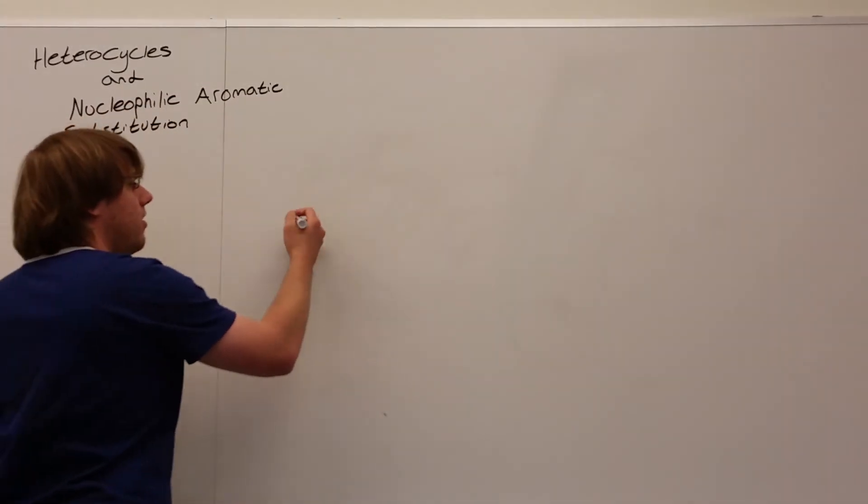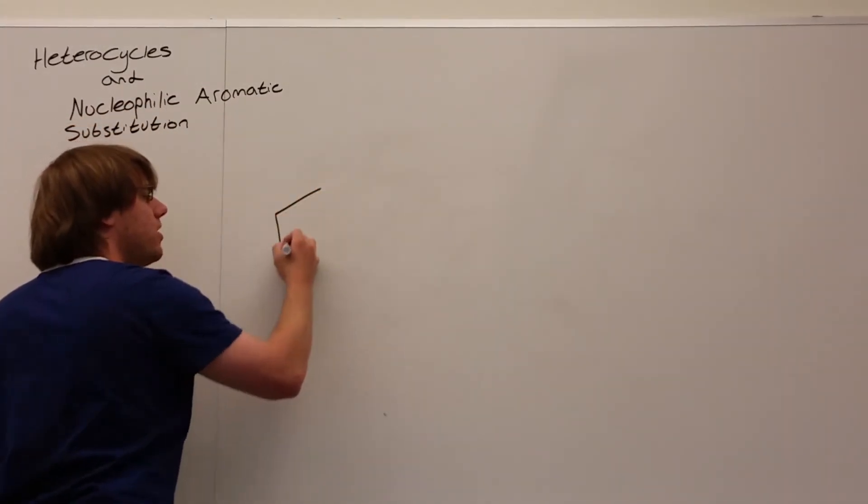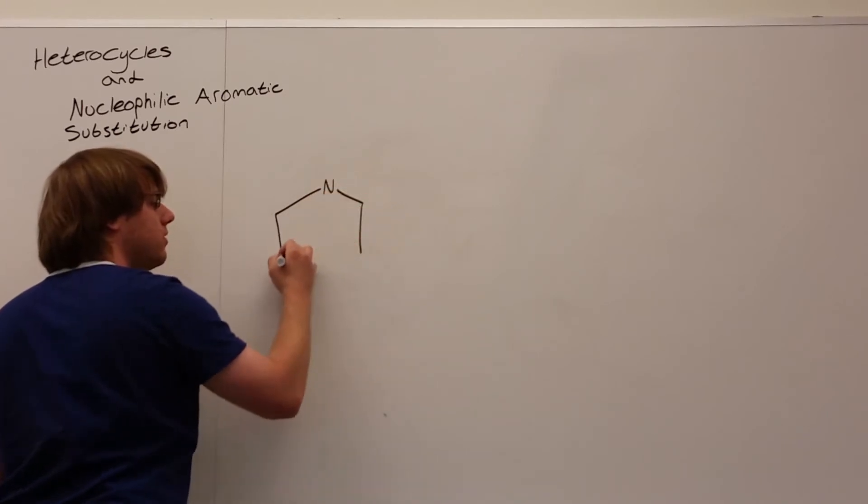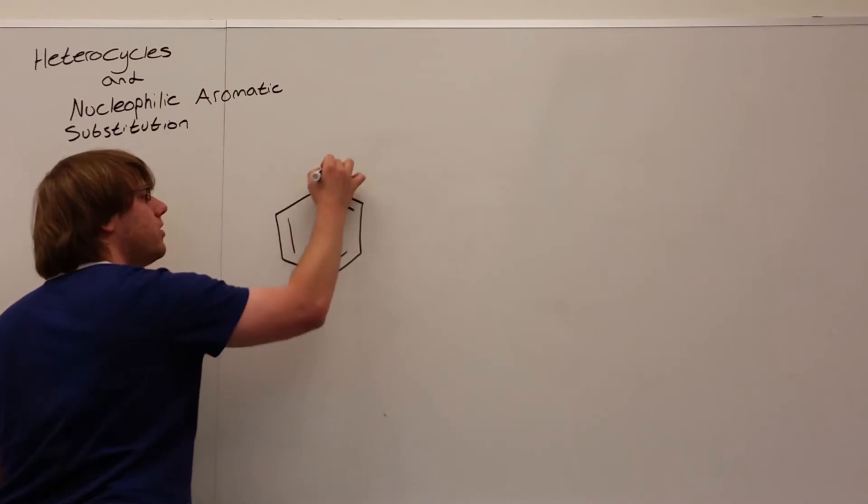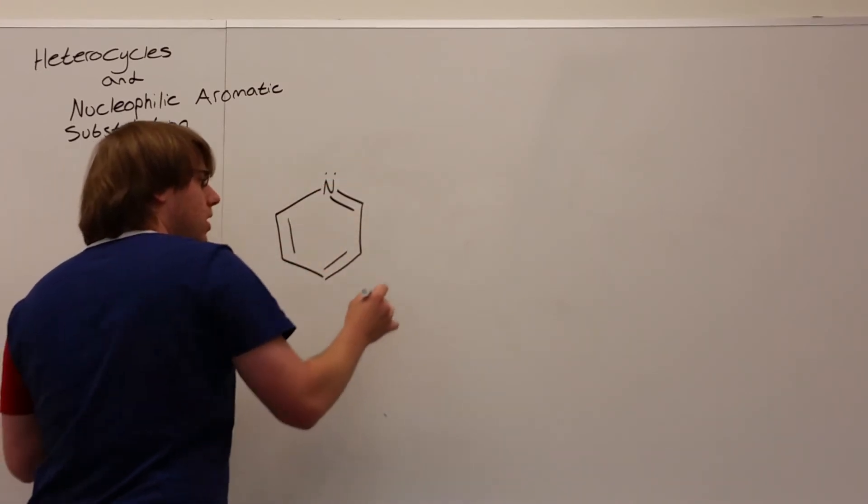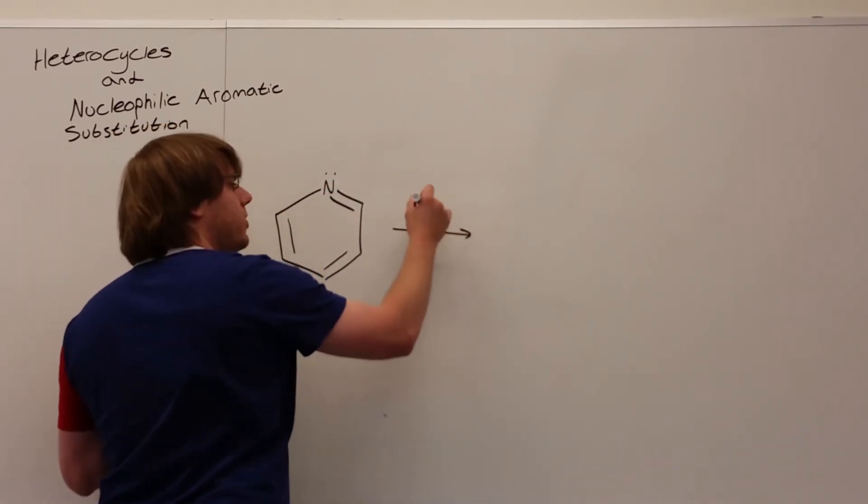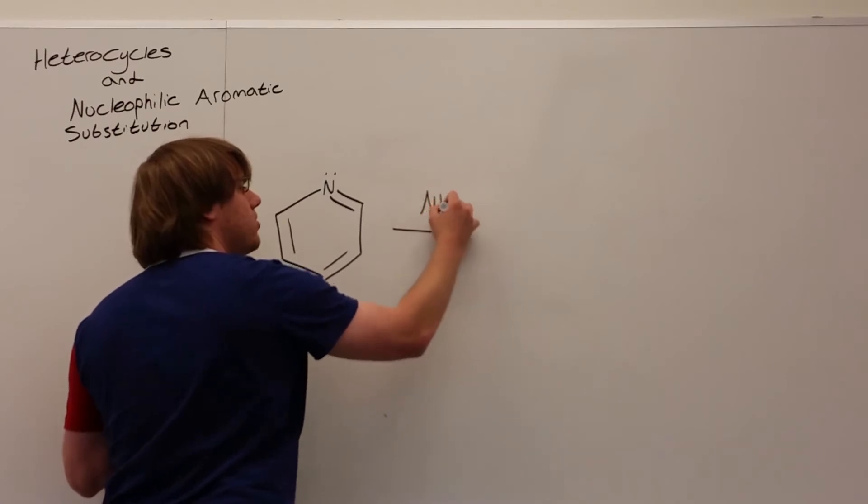So let's make one a little more complicated and just address how that should work. Let's say I have the following heterocycle. Once again, let's put the nitrogen here. And over the arrow, I'm going to react with, say, NH3.